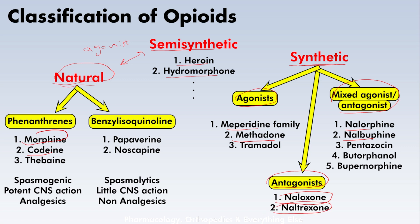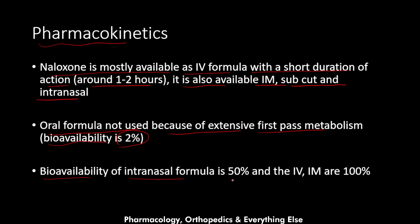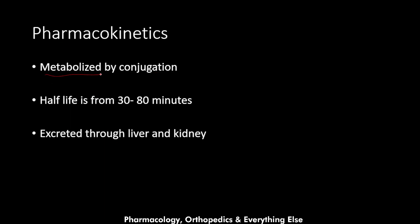Naloxone is mostly available as an intravenous formula with a shorter duration of action of about 1 to 2 hours. It is also available as intramuscular, subcutaneous, and intranasal formulations. The oral formula is not used because of extensive first-pass metabolism, giving it a bioavailability of only 2%. The intranasal formula has a bioavailability of 50%, while the intravenous and intramuscular routes are 100%.